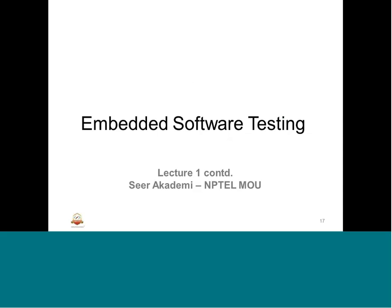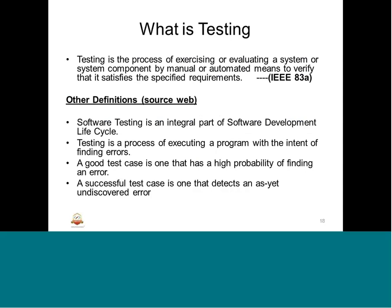Embedded software testing — what is testing? This is the IEEE definition, and it is applicable for any testing, especially software testing, whether embedded or non-embedded. The process of evaluating a system or system component by manual or automated means to verify that it satisfies the specified requirements. Testing is a process that exercises or evaluates a system, subsystem, or component by different means to verify it satisfies a given set of requirements.